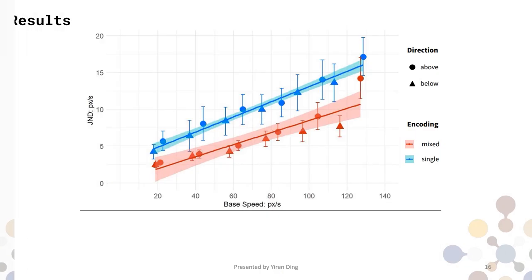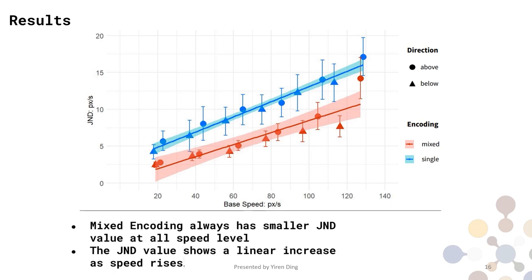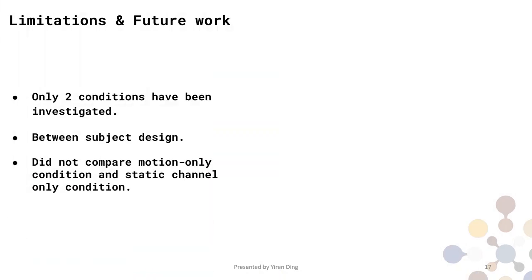After the adjustment, we can fit linear regression model to the dataset. Here is the model result. As we can see, the mixed encoding performance is better than the single encoding performance at each speed level. Then, the JND value appears to linearly increase as the speed rises within the on-screen speed range. That's the end of our modeling part.